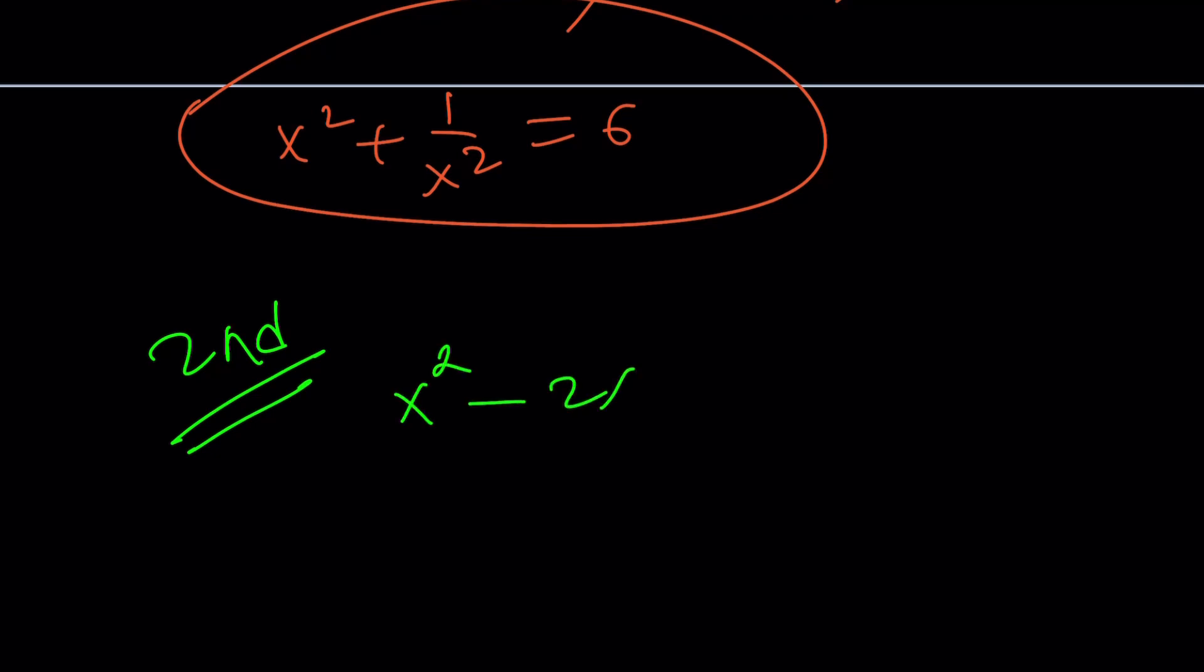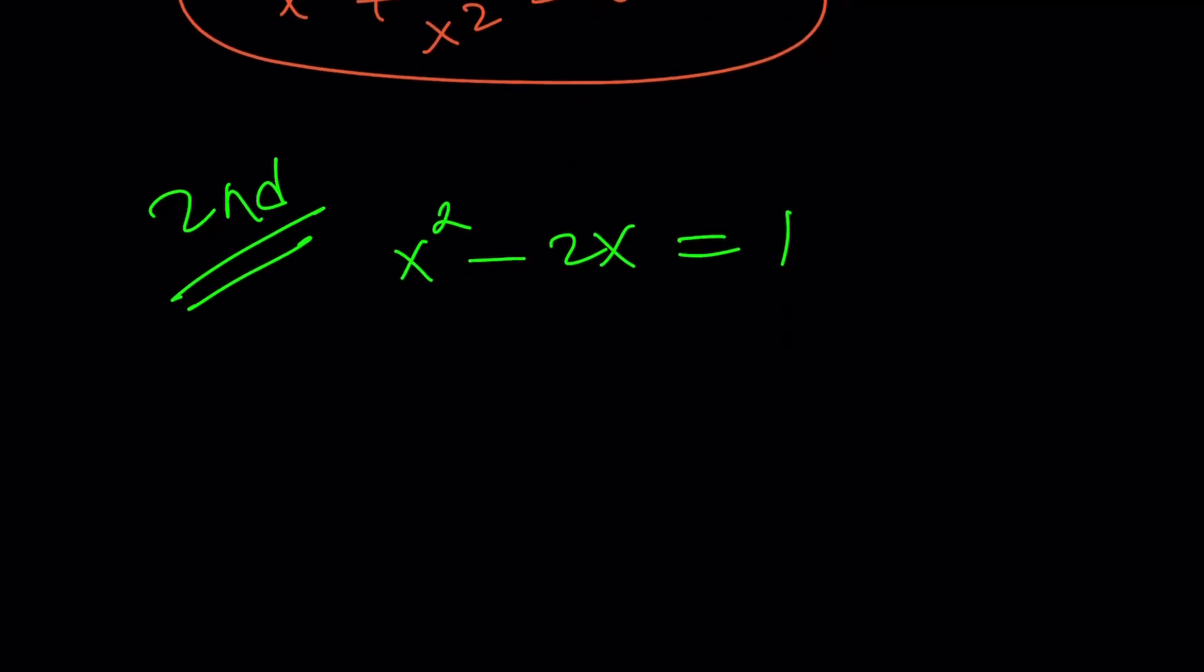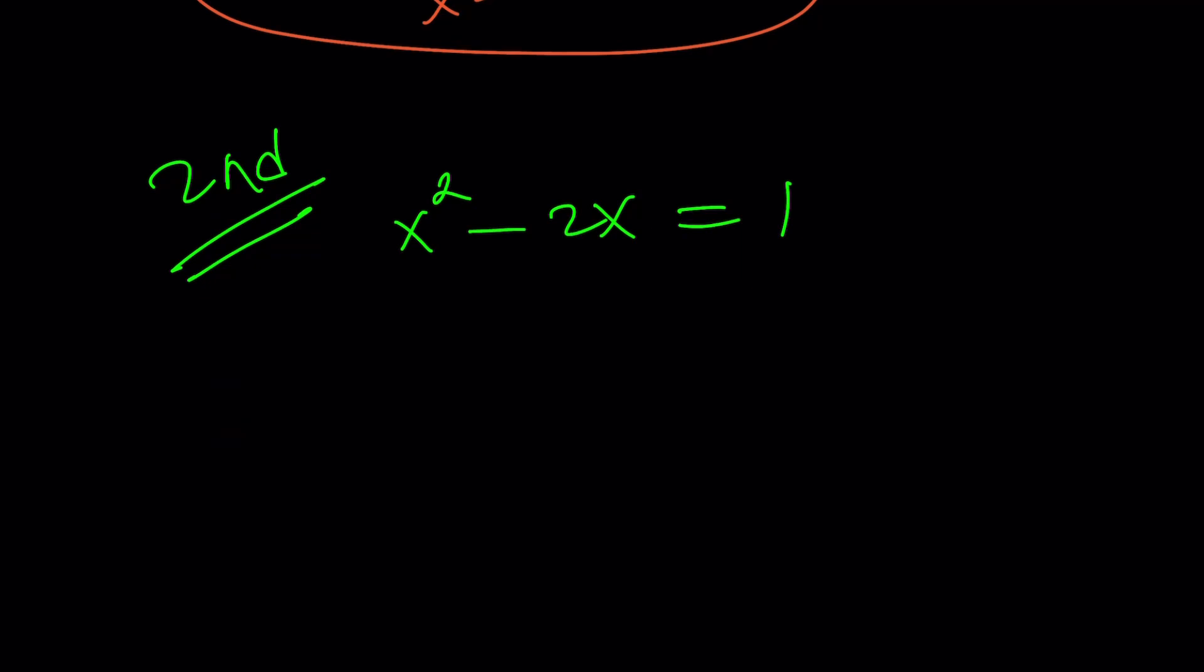Let's go ahead and take a look at the second method. Again, we're given x squared minus 2x equals 1. And of course, if you wanted to use the quadratic formula, you could. You'll get the same x value.